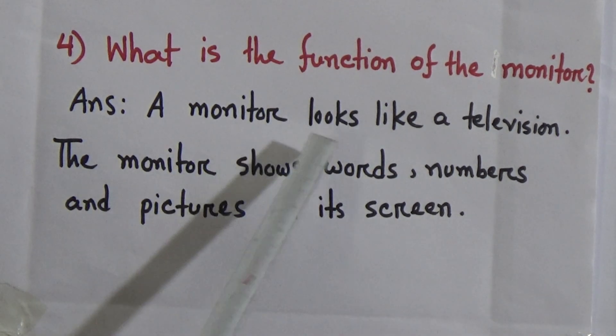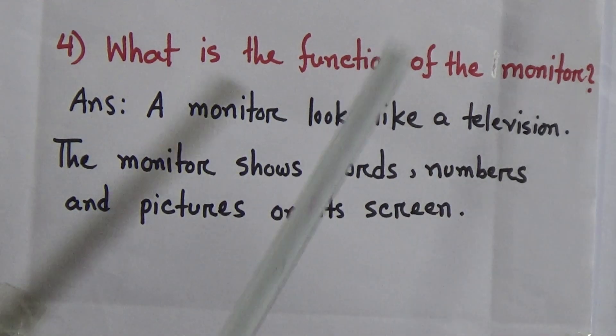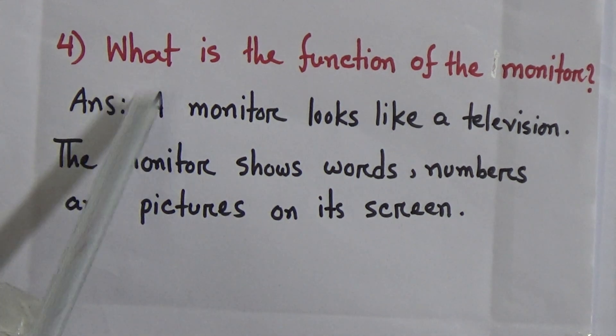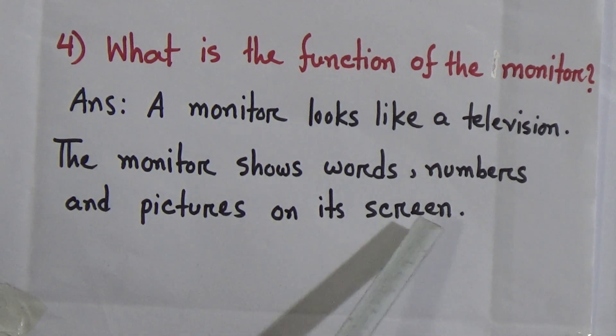Student, we know that we can see the monitor. The monitor looks like a television. On the monitor, we can see words, numbers, and pictures on its screen. The answer of this question is: A monitor looks like a television. The monitor shows words, numbers, and pictures on its screen.